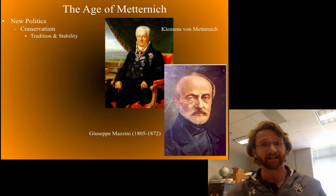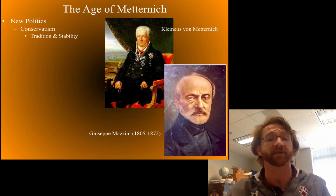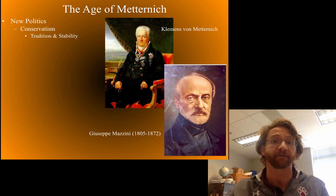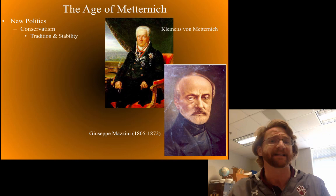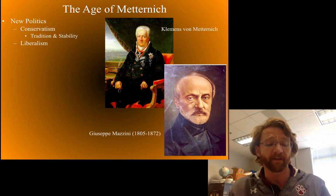In Europe in the 19th century, conservatism basically meant going back to the nobility having all the say, the aristocracy having power, and limiting the rights and freedoms of people. They had seen the violence of the French Revolution — they saw how the mob, as they were often called, could make bad decisions and do really bad things, making Europe very unstable.